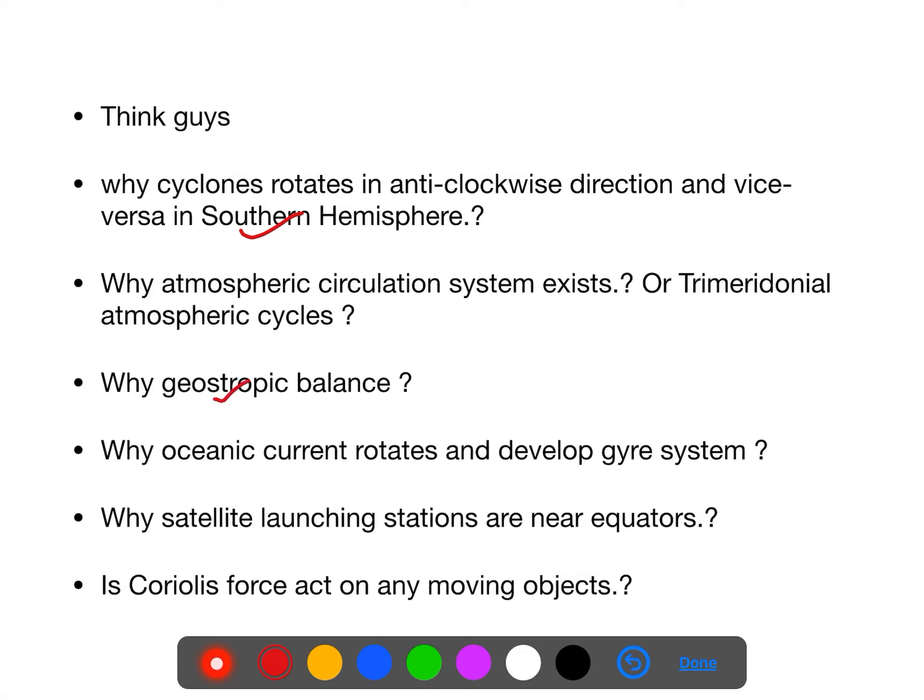Why in upper atmosphere the geostrophic balance, that means the pressure gradient force is balancing with other force and producing the wind which moves parallel to the isobar, and this concept is called geostrophic balance?